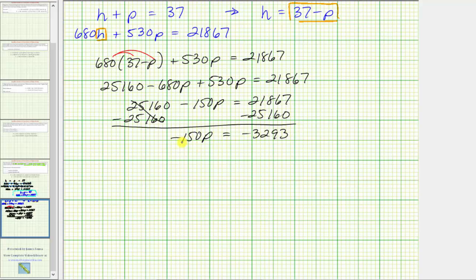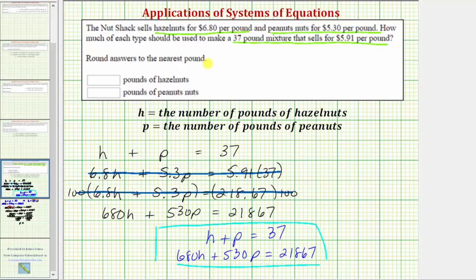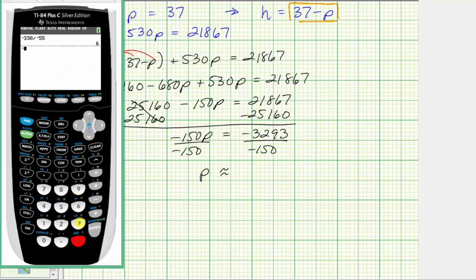And our last step to solve for p is to divide both sides by negative 150. Simplifying on the left, this simplifies to 1p, or p. Now we need to find this quotient, but the directions do say to round to the nearest pound, which means we'll round to the ones place value. Negative 3,293 divided by negative 150, rounded to the ones place value, would round to 22.